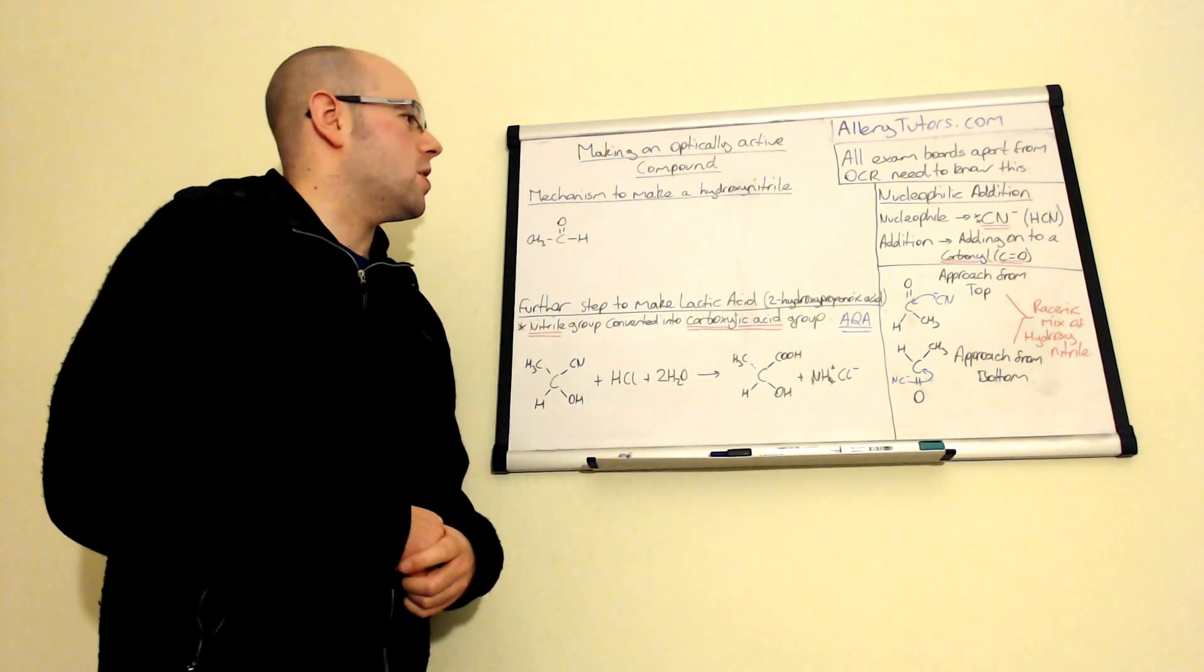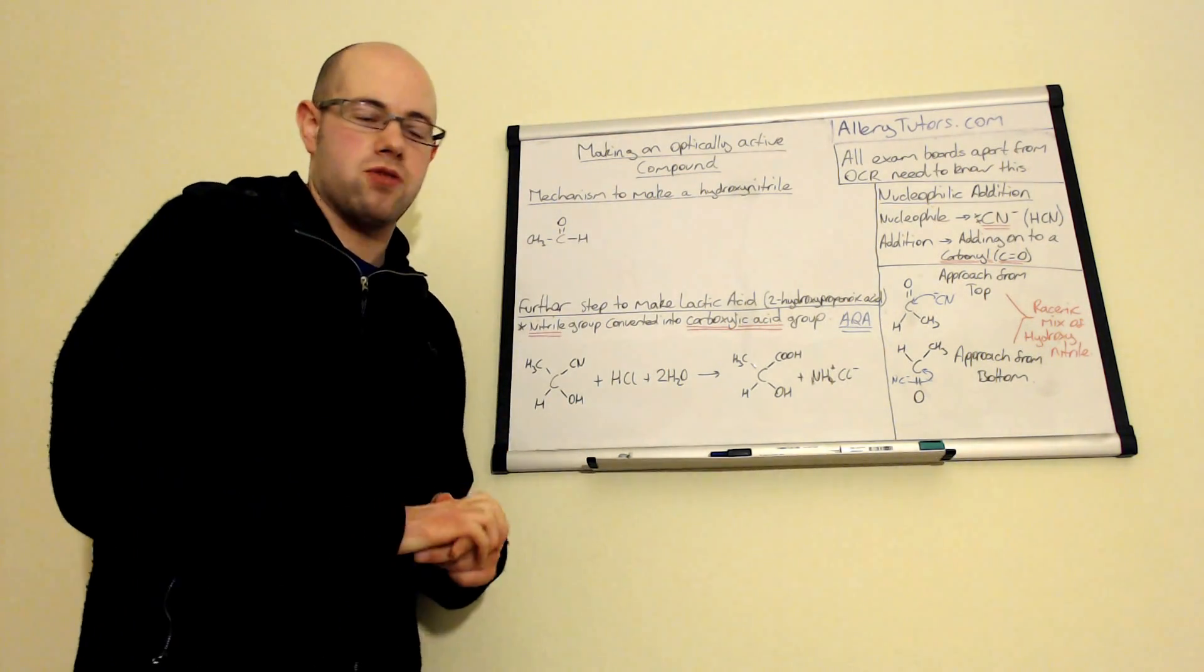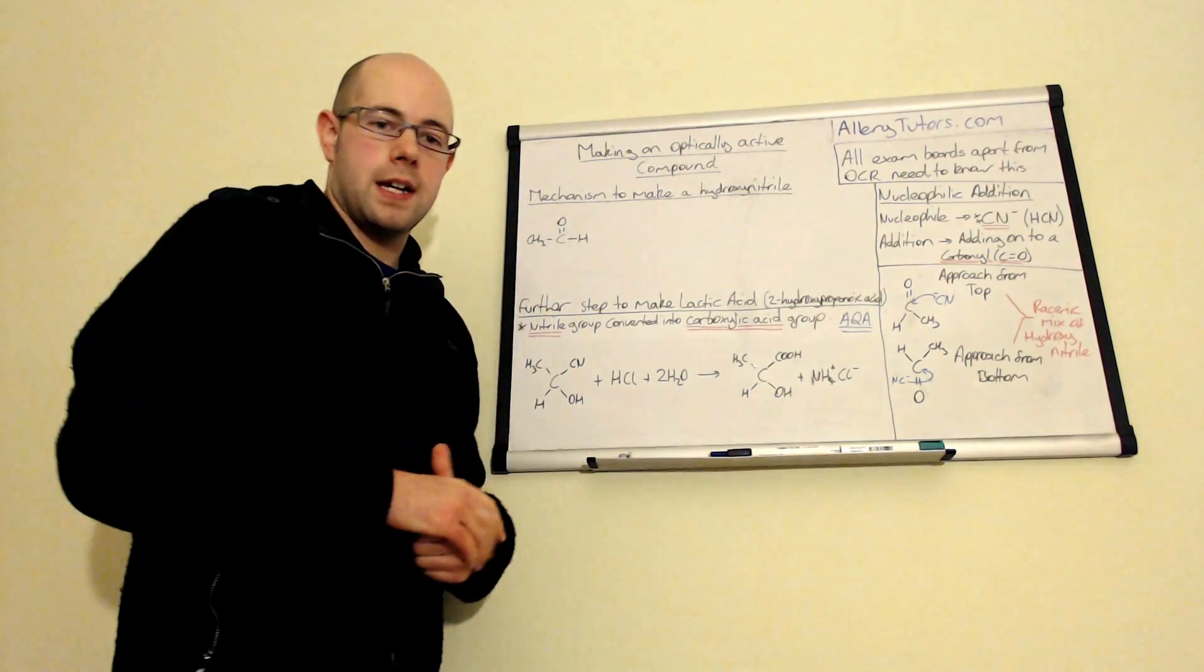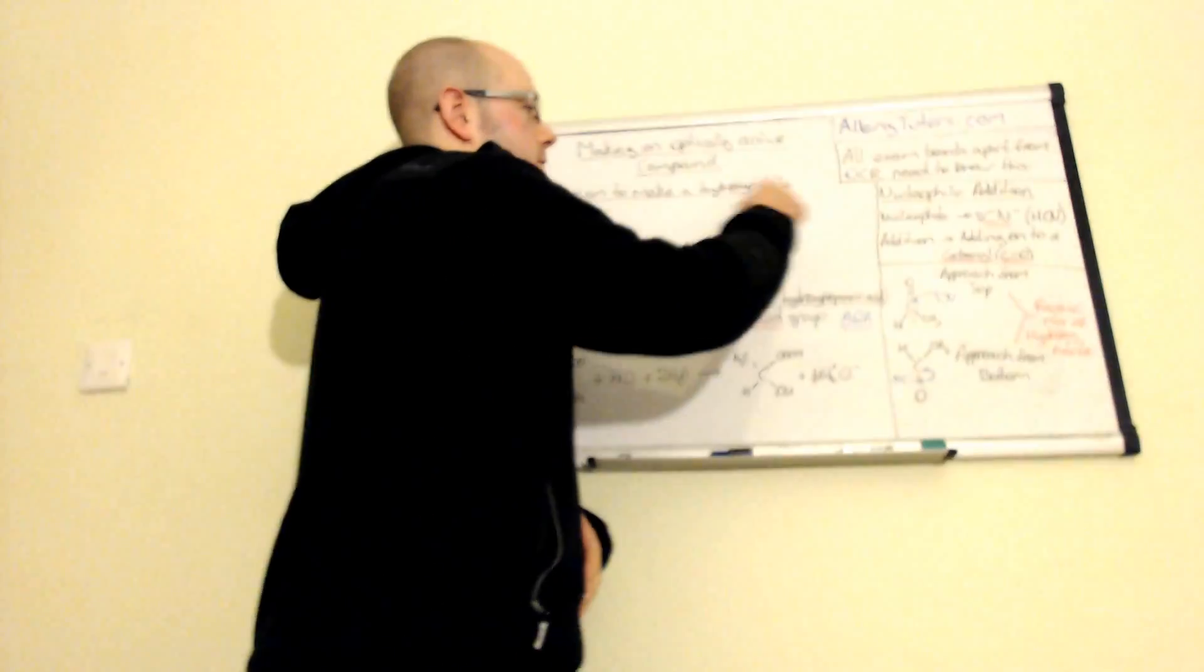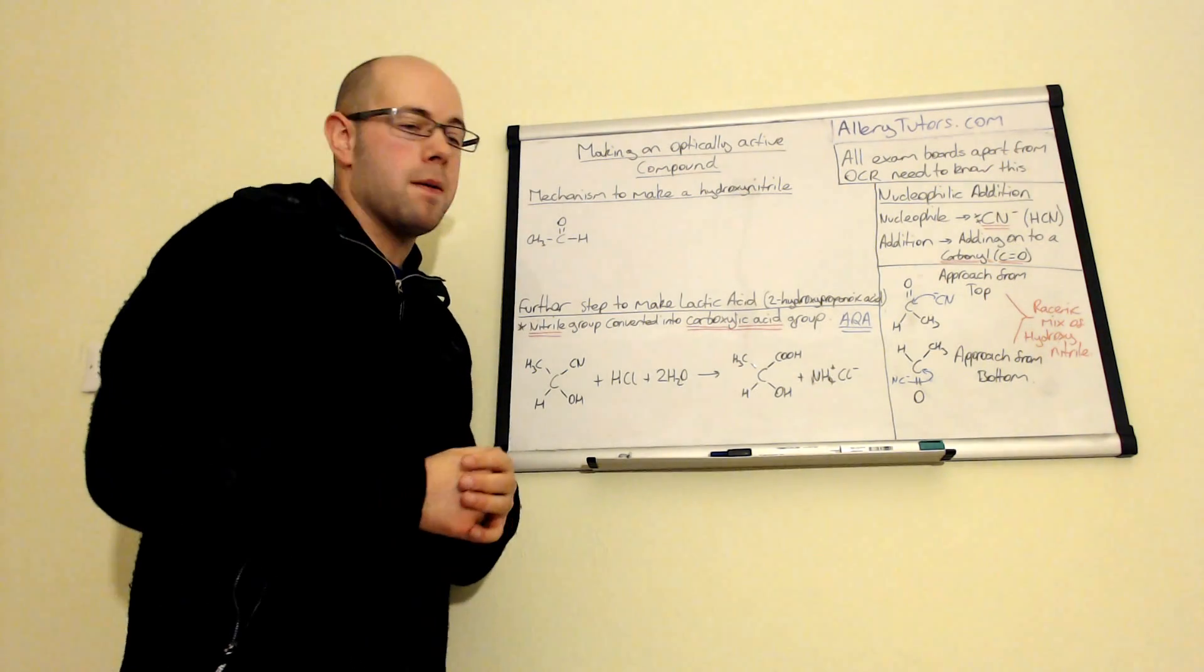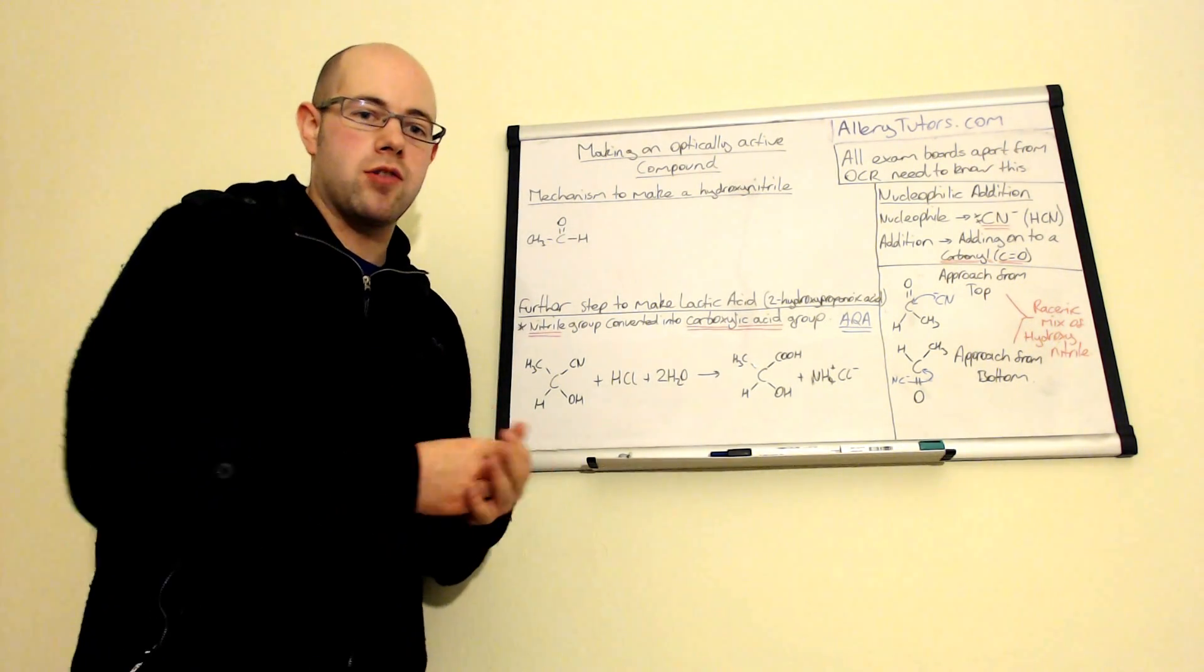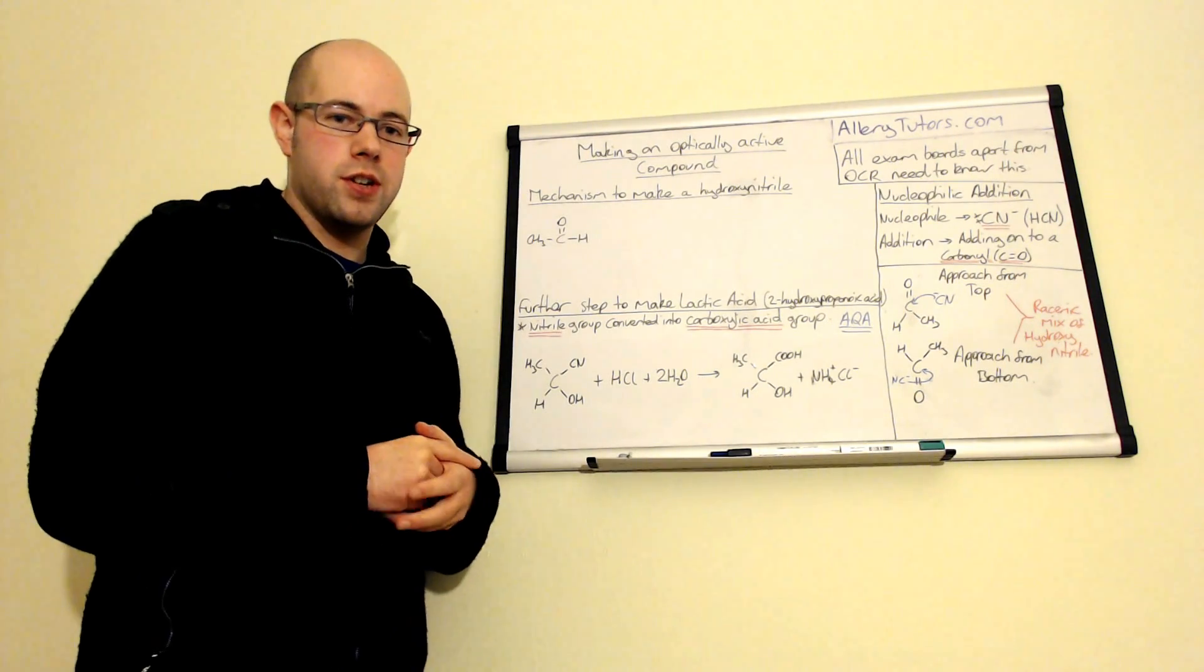So we're going to start with the mechanism. Now the mechanism to make hydroxynitrile follows a nucleophilic addition mechanism. The nucleophile in this case is cyanide which is the CN minus ion and we're going to use it from hydrogen cyanide. Generally hydrogen cyanide is very difficult to use. Not only is it incredibly toxic but it's a gas.